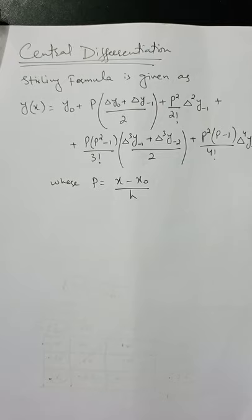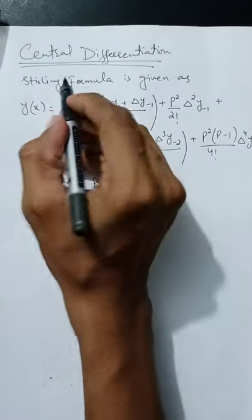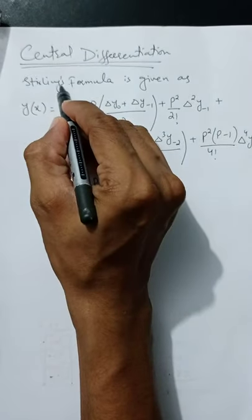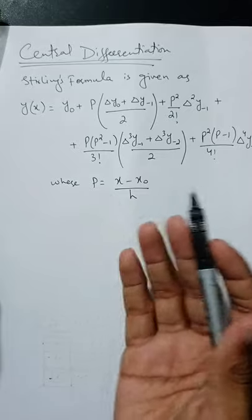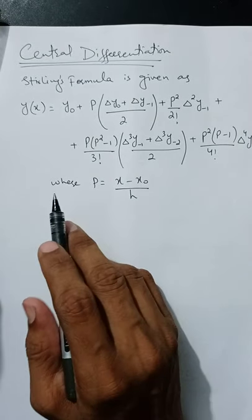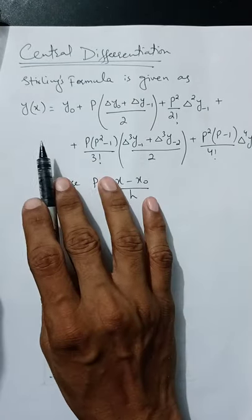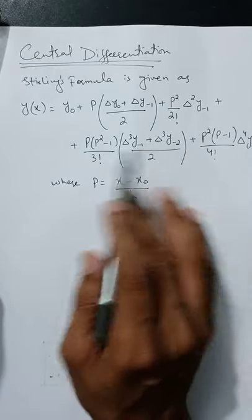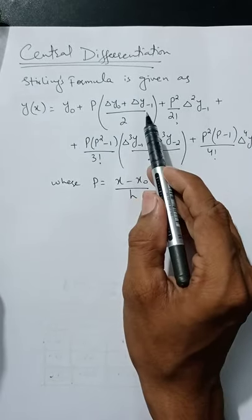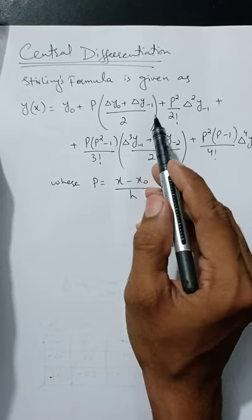Now for central differentiation, the formula is derived by using Stirling's formula. The Stirling interpolating polynomial or formula is given as y(x) = y₀ plus p into... — this is basically a formula where the indices are something different or new.